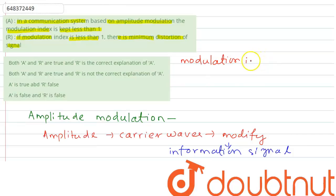This is equal to amplitude of the message signal or the information signal divided by amplitude of the carrier signal.